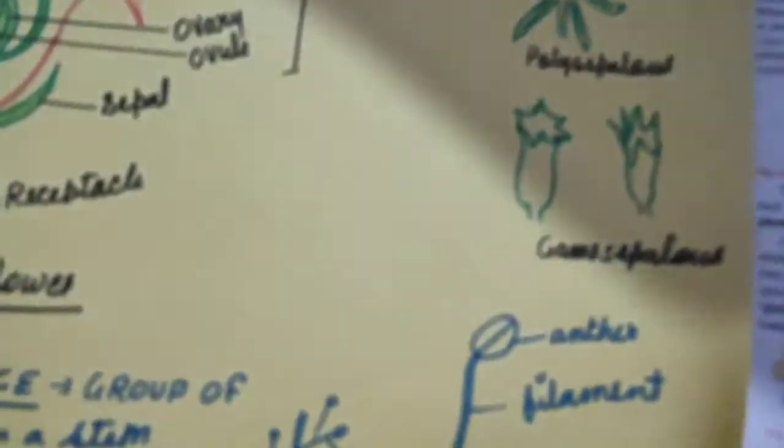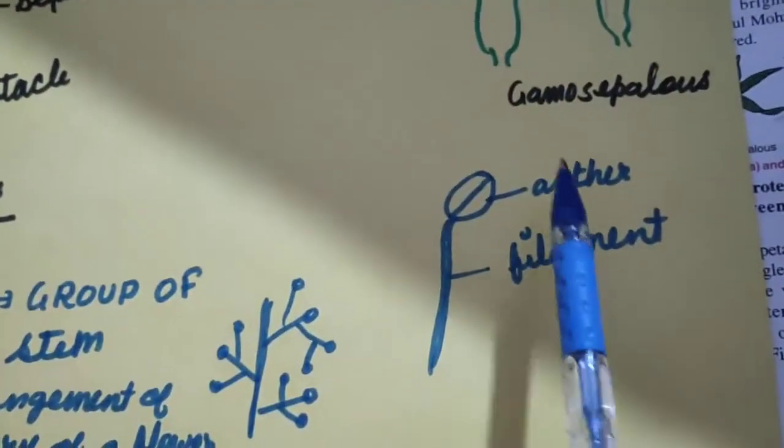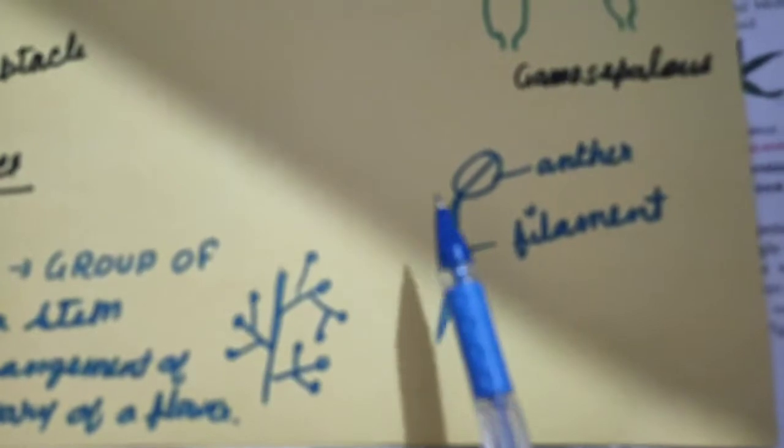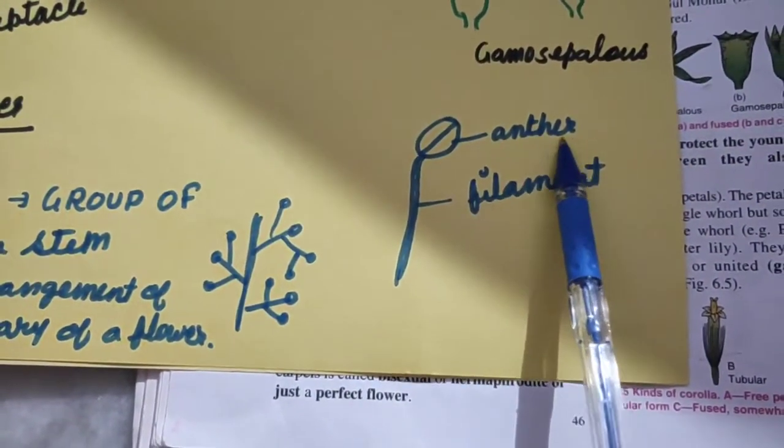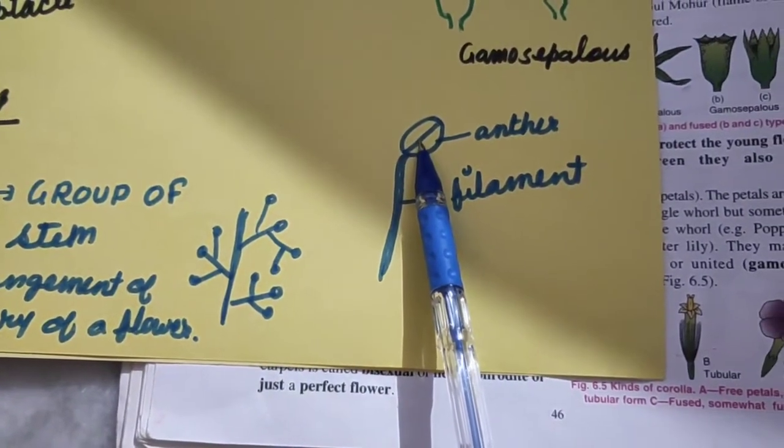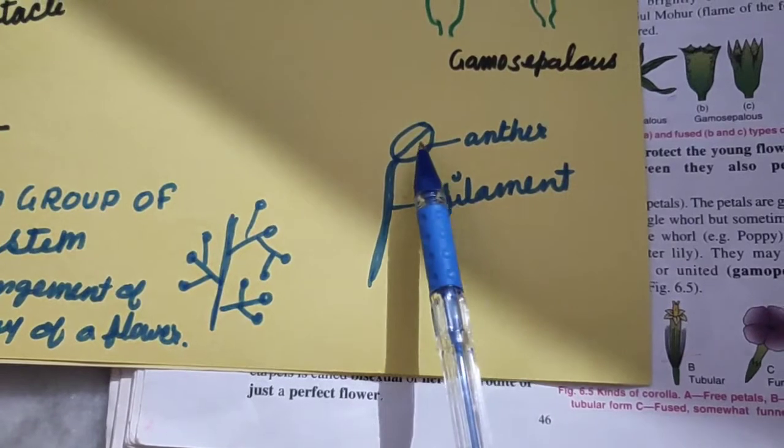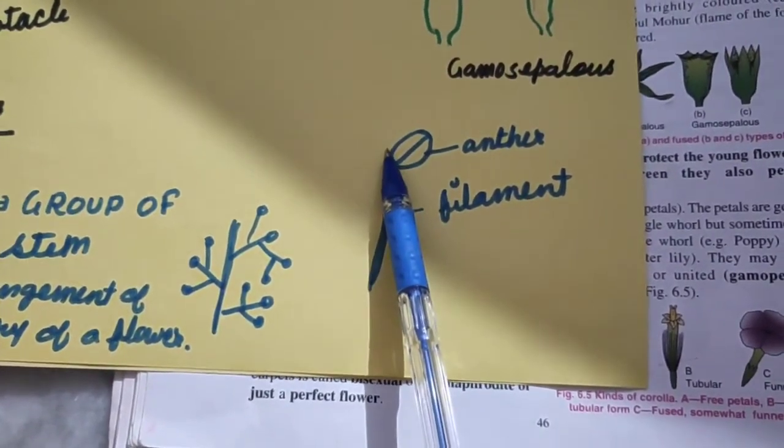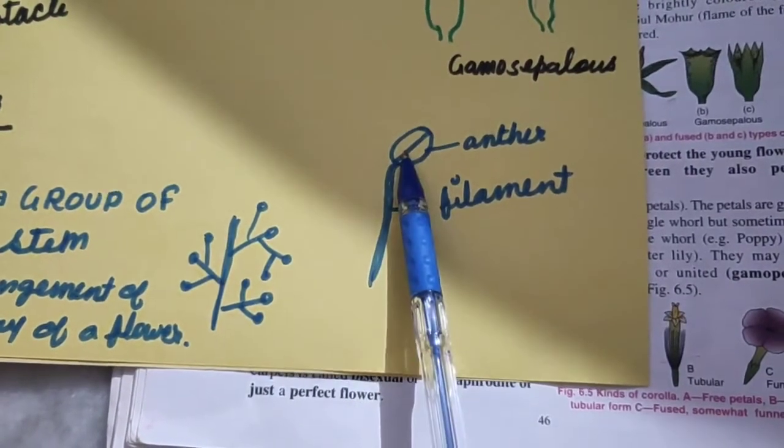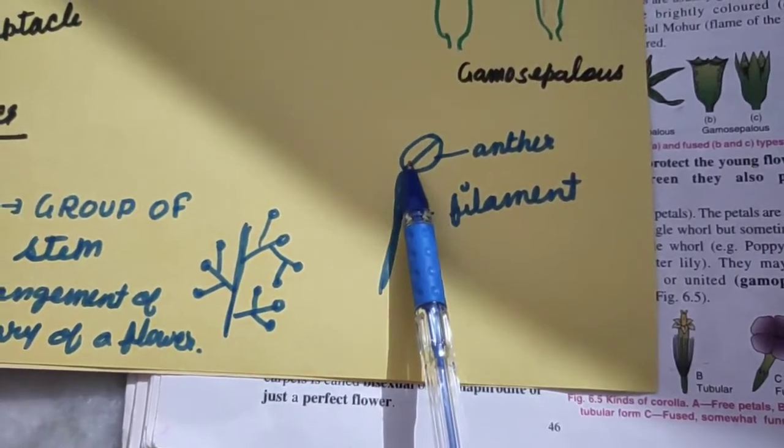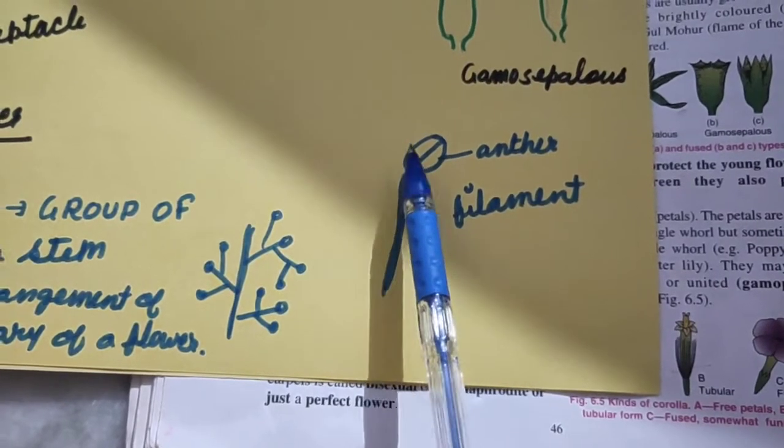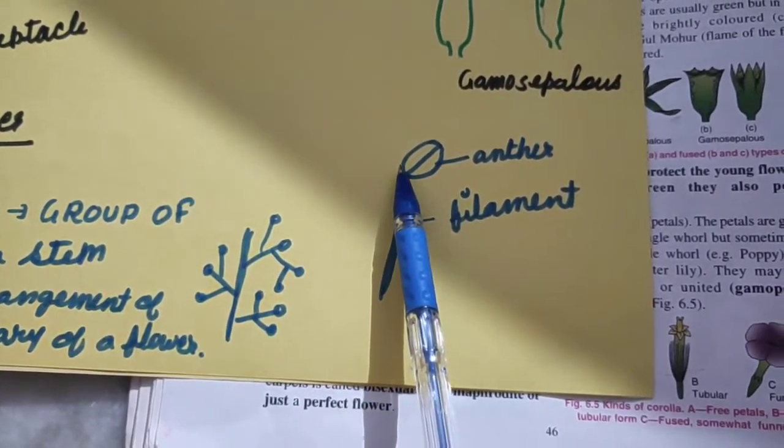Androecium. Stamens are collectively androecium. This is the structure of a stamen. Two regions are there: anther and filament. In anther, pollen grains are produced. Anther has, this structure is bilobed. Each lobe has two pollen sacs, four sacs in all. And within the pollen sacs are pollen grains. And when they are fully matured, the pollen sac rupture and pollen grains comes out.